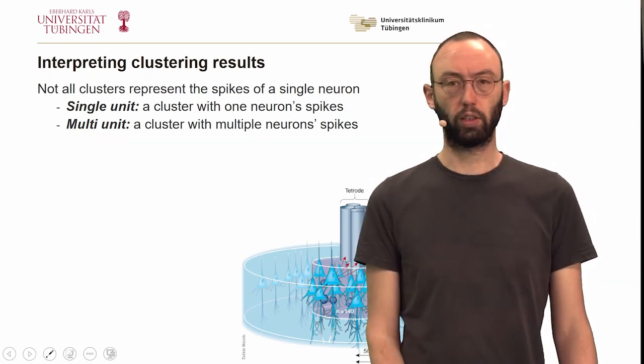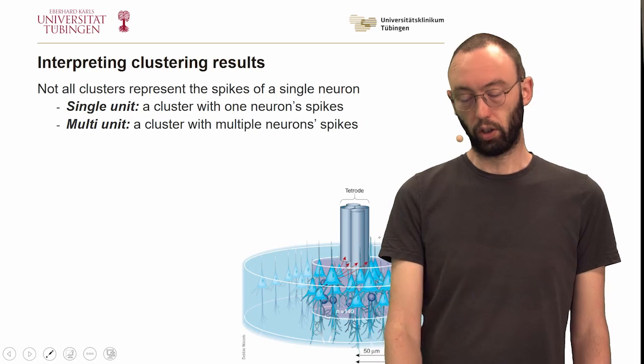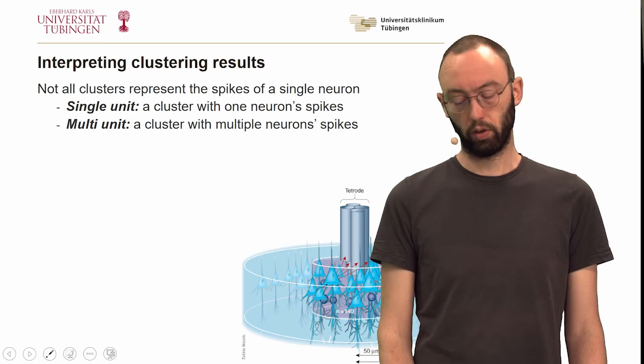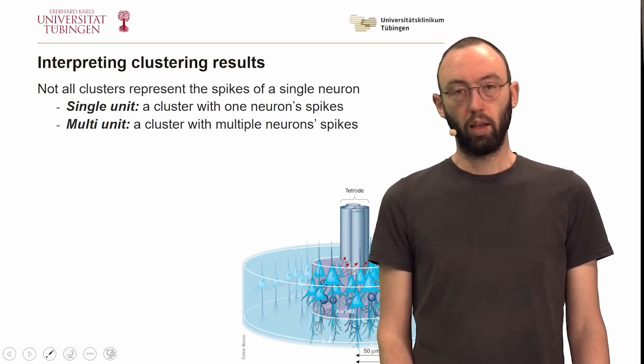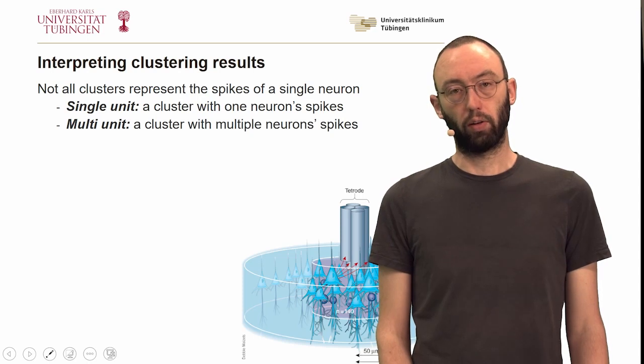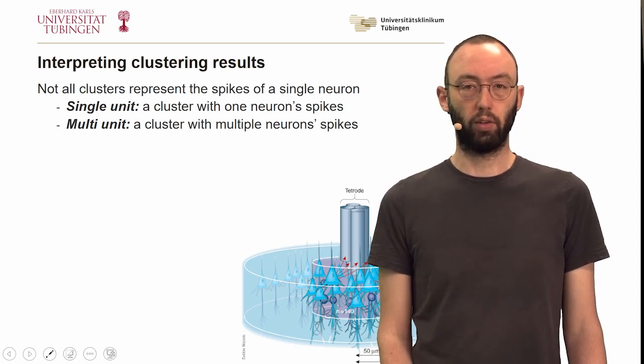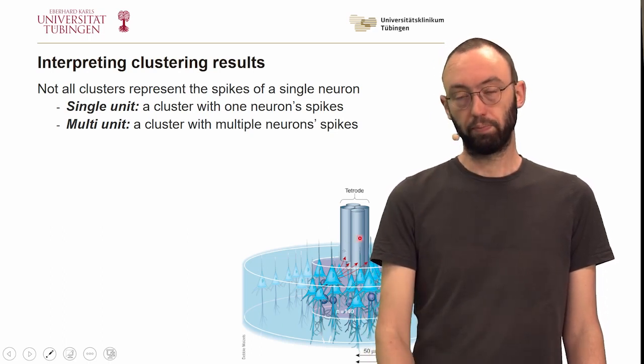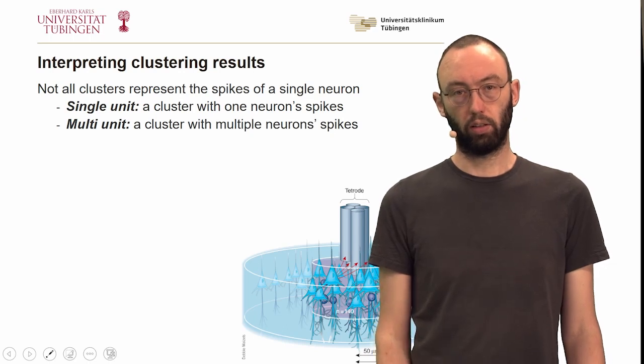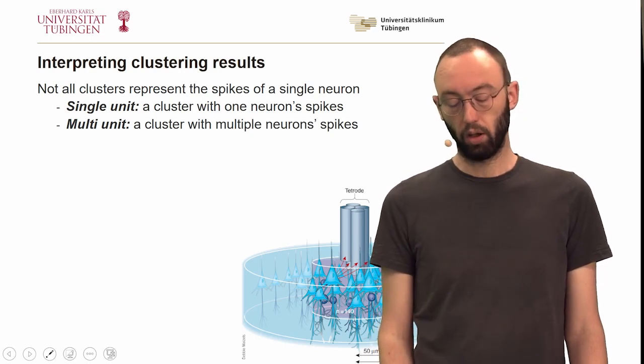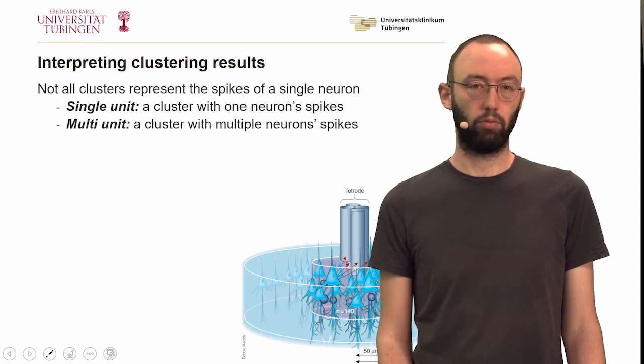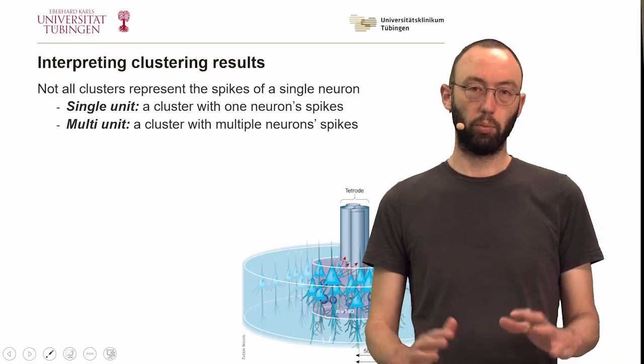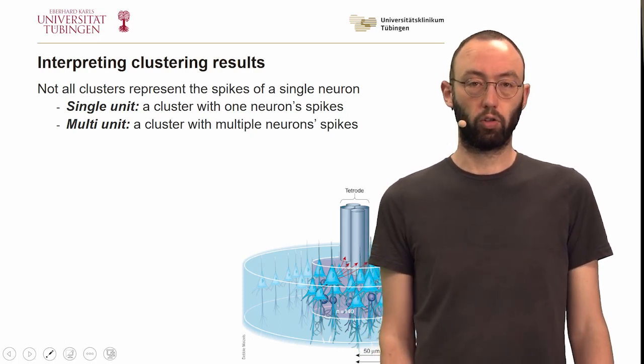We can understand that by looking again at this illustration of how tetrod recordings work. Neurons that are very close to the tetrod within a radius of a few dozen microns lead to very large signals on the tetrod channels and often can be isolated into single unit clusters. But there's a larger group of neurons that are located in a larger radius around the tetrod, and because they are more distant to the electrode tip, their signatures are damped quite a lot and often cannot be distinguished from each other.